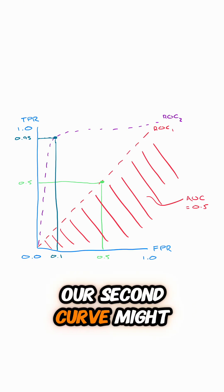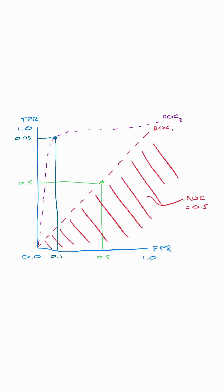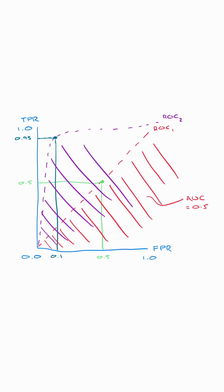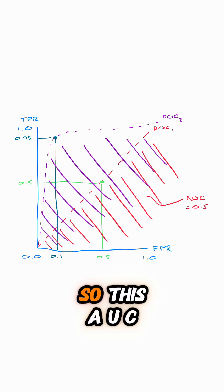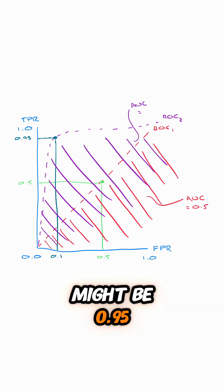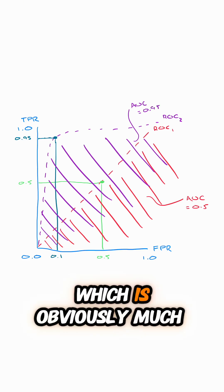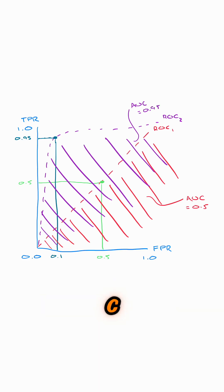Our second curve might have an AUC that is much better. This AUC might be 0.95, which is obviously a much, much better result.